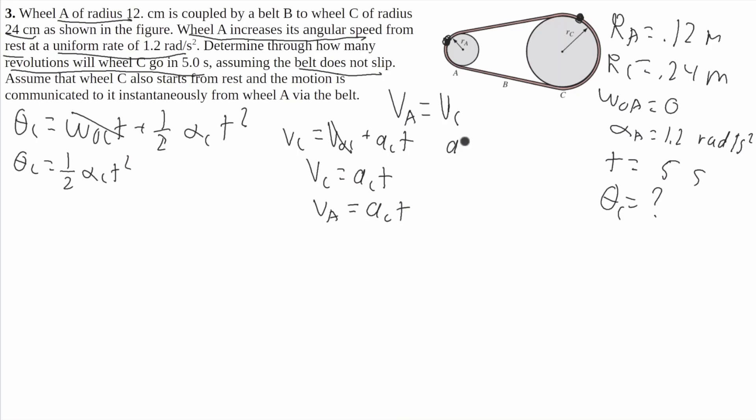Now A is going to equal alpha times R. We're just going to change these to values of C, so A C is going to equal alpha C R C. So V A will equal alpha C R C T. I'm going to get alpha C on one side, so I'm going to divide by R C T on both sides. We'll get alpha C equals V A over R C T.